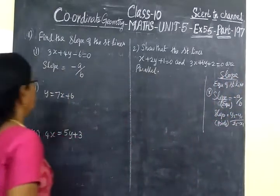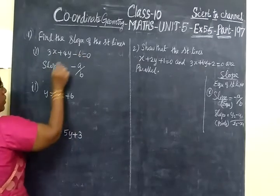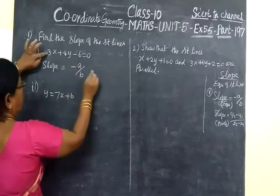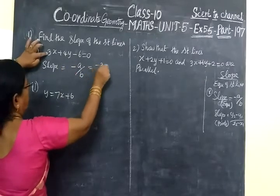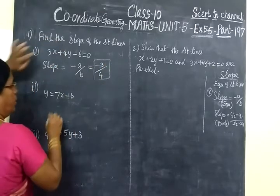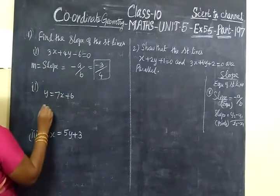Using that, this equation put in the slope. So slope equals minus a by b. So a is what? 3. Minus 3 by b 4. So answer minus 3 by 4. So m equals minus 3 by 4.